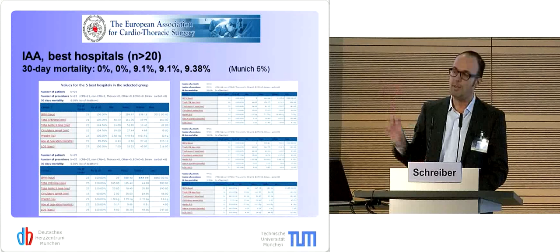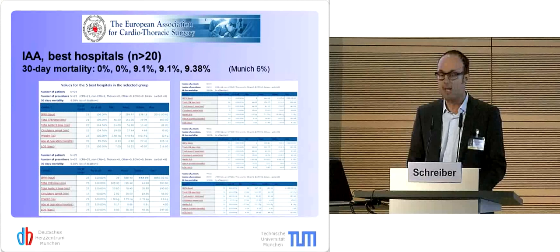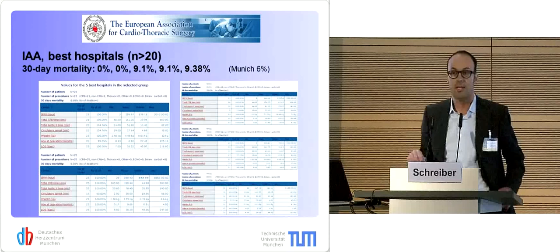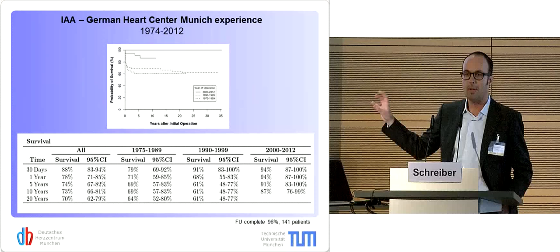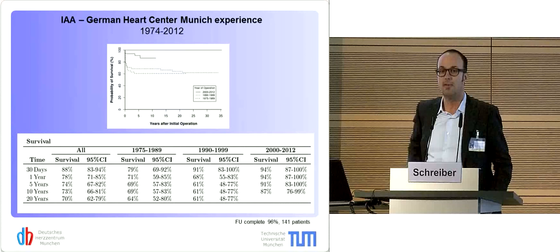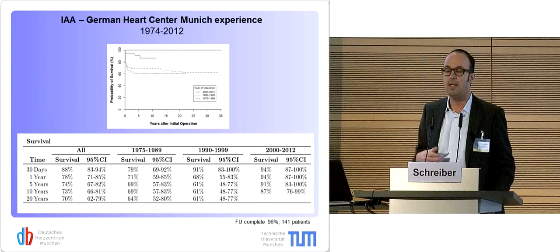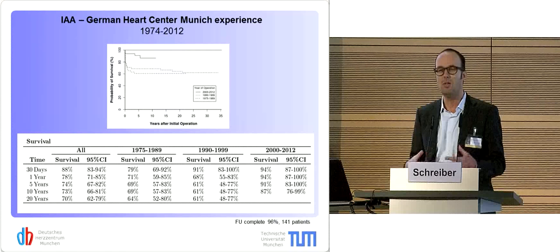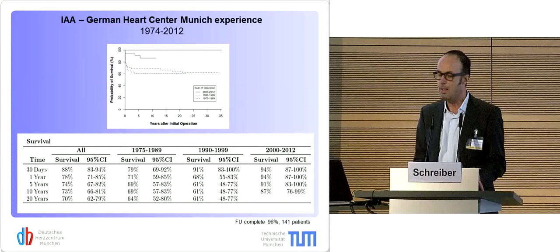From this database you can identify the five best hospitals — usually those doing more than 20 cases a year, of which there are not many — and some apparently have no early mortality. We currently have an early mortality of 6%. This is very hot, unpublished data: 149 patients with 96% follow-up completeness. Early survival, I think, is not an issue anymore in Germany or Western Europe — early mortality is rather low.